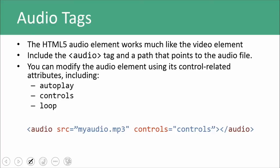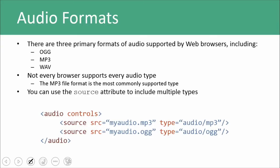We're going to touch on audio tags. You can add audio to a web page with an audio tag and a path that points to the audio file. Similarly to video, you can use the autoplay, controls, and loop attributes to perform the same functions. Note that instead of just writing controls, you can include a value for the controls attribute, but it's probably easier to just use shorthand — just stick to controls alone as the attribute. There are three primary formats of audio supported, just as with video: OGG, MP3, and WAV. Not every browser is going to support every audio type, so we use the source attribute to include multiple types, with source nested inside the audio tags to access the MP3 and OGG formats.